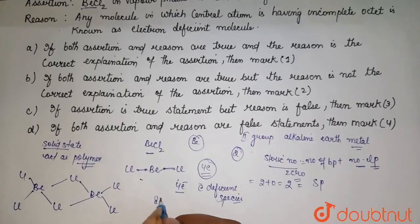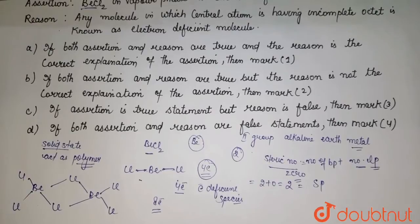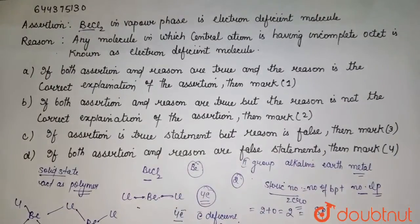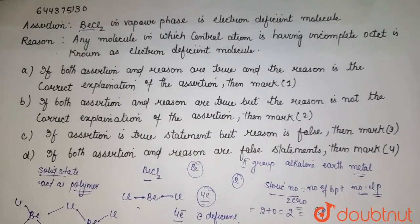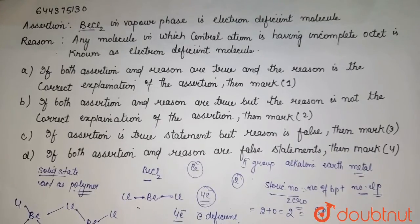So here we are having two statements: that BeCl2 in vapor phase is electron deficient molecule, and your reason is any molecule in which central atom is having incomplete octet is known as electron deficient molecule.